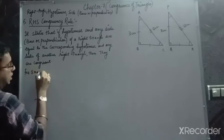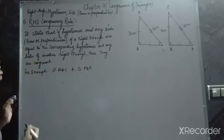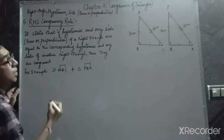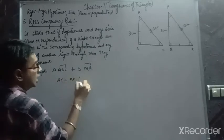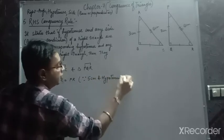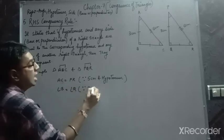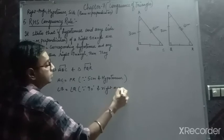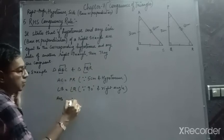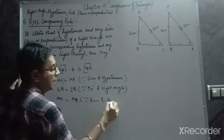For example, in right triangle ABC and triangle PQR: AC equals PR, both are 5 cm and both are the hypotenuse. Angle B corresponds to angle Q, both are 90°. AB corresponds to PQ, and both are equal at 3 cm — they are the perpendicular sides. It can be the base also, that's not a problem.